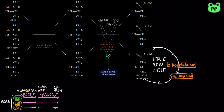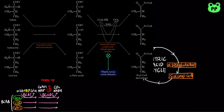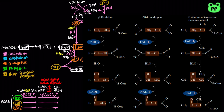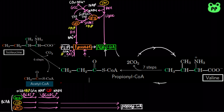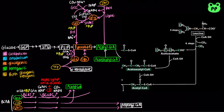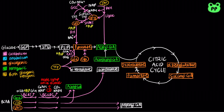Genetic defect in BCKDC leads to maple syrup urine disease, which causes vomiting, convulsions, mental retardation, and early death. The subsequent oxidation of the derivatives of leucine and valine resemble the four repeating steps in beta-oxidation, as well as the last four steps of the citric acid cycle. Ultimately, valine is degraded to propionyl-CoA, isoleucine is degraded to both acetyl-CoA and propionyl-CoA, whereas leucine is degraded to both acetyl-CoA and acetoacetate. From these reactions, we see that threonine, isoleucine, and leucine can be degraded into acetyl-CoA.